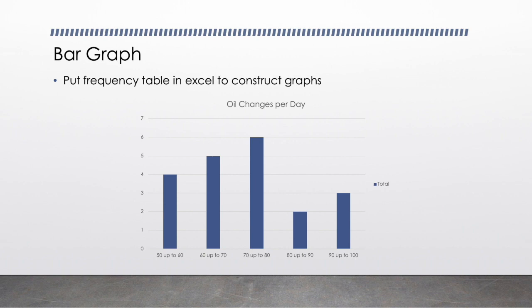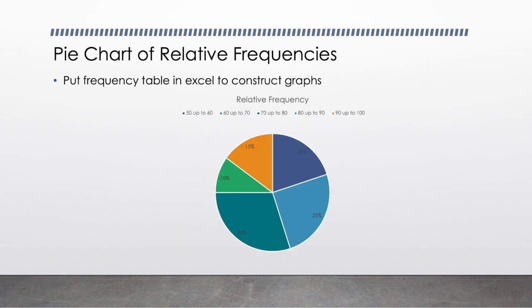I also calculated what's called a relative frequency. To calculate your relative frequency you take the frequency in each class and divide by the total number or your n, which in this case was 20. So for 50 to 60, our relative frequency was 20 percent. 90 to 100 was 15 percent. So the least frequently occurring was the 80 to 90 oil changes per day, and the most frequently occurring is right here at 30 percent with 70 to 80 oil changes per day.